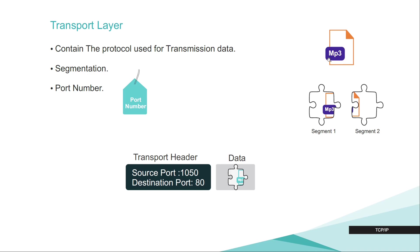For example, if we are planning to send an MP3 file that is large and cannot be sent all at once, we can segment it into two pieces — segment 1 and segment 2. There is also something called a port number, which we can think of as a label. The application layer has information about the application, and in the transport layer we have the port number, which identifies what type of application we are using. After defining the protocols, cutting the data into pieces, we add the source port and destination port to our data.